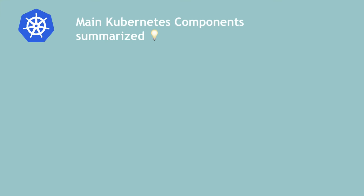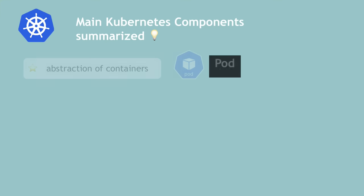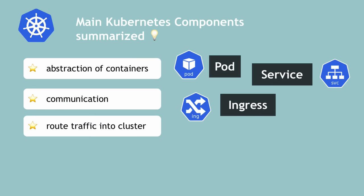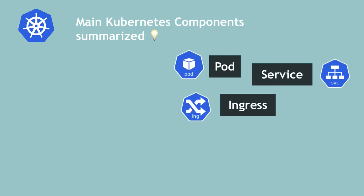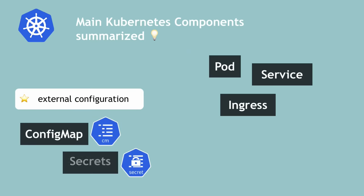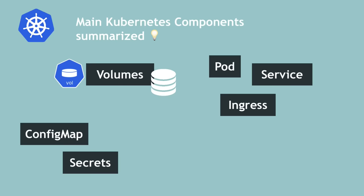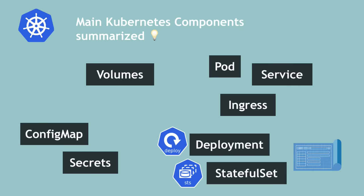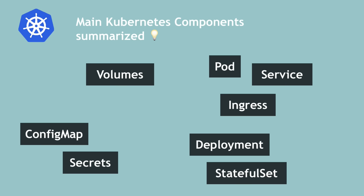With two replicas of the application pod and two replicas of the database, both load balanced, our setup is more robust. Even if the whole node server was rebooted or crashed, we'd still have a second node with application and database pods running, and the application would still be accessible until those replicas get recreated. To summarize: we've looked at pods, services, the ingress component, external configuration using ConfigMaps and secrets, data persistence using volumes, and pod blueprints with replicating mechanisms like deployments and StatefulSets — where StatefulSet is used specifically for stateful applications like databases. Just using these core components, you can build pretty powerful Kubernetes clusters.